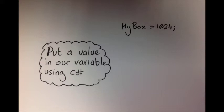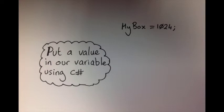To be able to put a value into a variable or a box as we're modelling it, in C-Sharp we use the name of our box or the name of our variable and we use the equal sign and then the value that we want followed by semicolon. So what we're saying here is put 1024 into the variable my box.